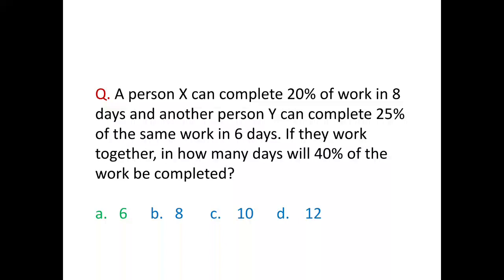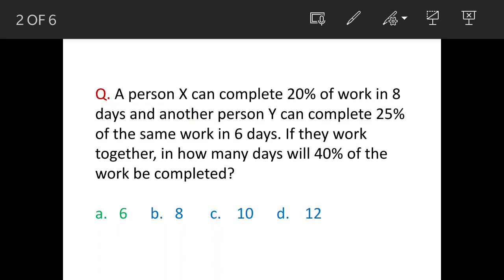We'll see a question on work done. The question says person X can complete 20% of work in eight days and another person Y can complete 25% of the same work in six days. If they work together, in how many days will 40% of the work be completed? The answer is option A, six days.